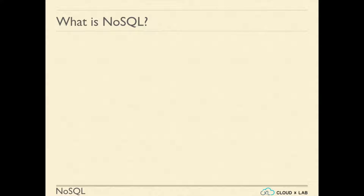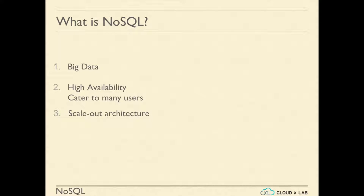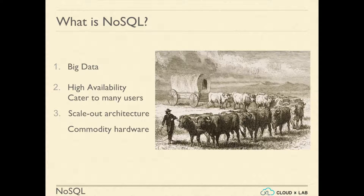What is a NoSQL data store? It is a data store that can store and handle really big data and provide high availability, which means serving many concurrent users. NoSQL achieves this with scale-out architectures, which means we can have many machines and these machines can be commodity hardware. Each NoSQL supports addition of hardware whenever needed.